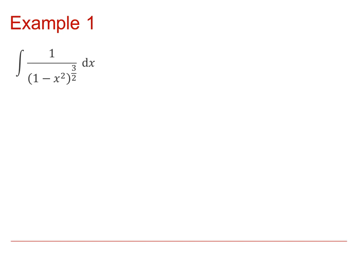We're going to give a few examples now of how we can use this substitution to find some integrals. First, consider the integral of 1 over (1 minus x²) to the power of 3 over 2. That of course includes the square root of 1 minus x squared. So if we let x equal sin(u), then dx/du equals cos(u).